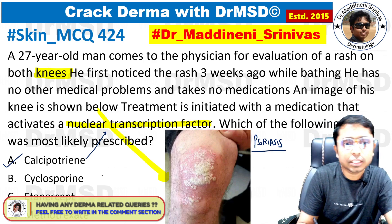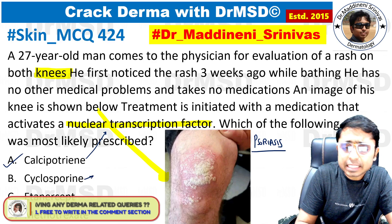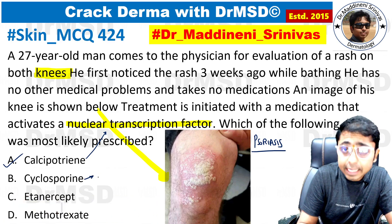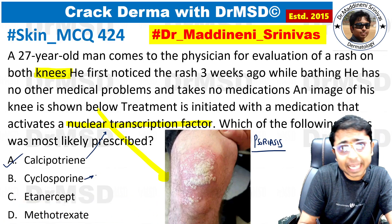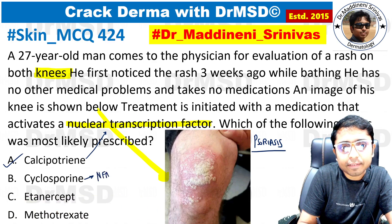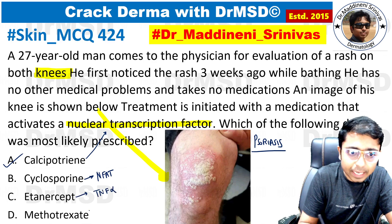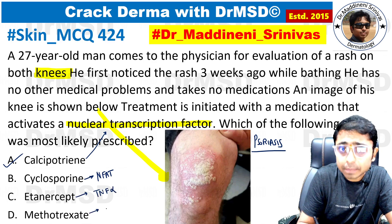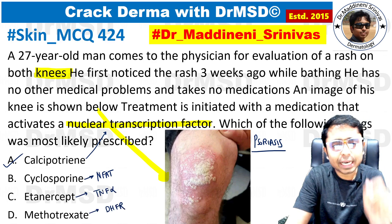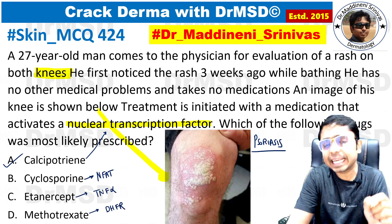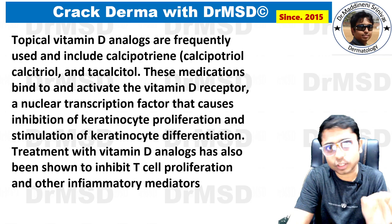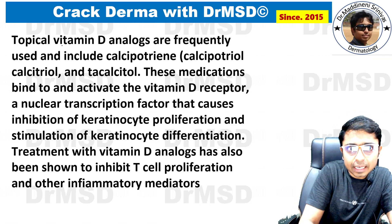Cyclosporine is a calcineurin inhibitor which acts through NF-AT. Etanercept acts through tumor necrosis factor alpha. Methotrexate is a dihydrofolate reductase inhibitor. Let us now look at each of these drugs in detail.